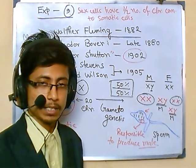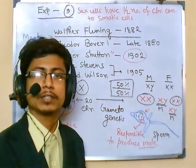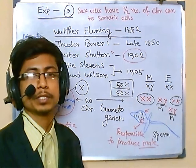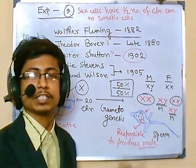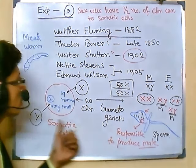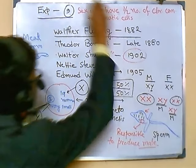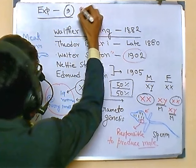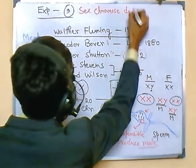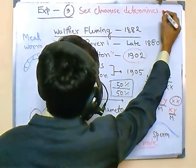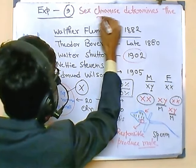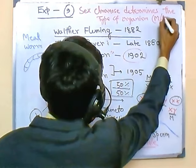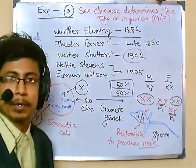This is true for human beings. The inheritance pattern follows Mendel's rule — the law of segregation — and it helps us distinguish between male and female and understand sex determination in mammals and other organisms. In conclusion, Experiment 9 shows that sex chromosomes determine the type of organism — male or female.